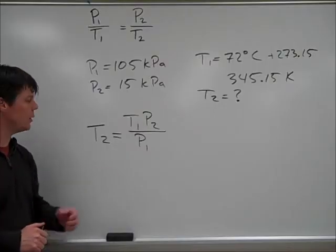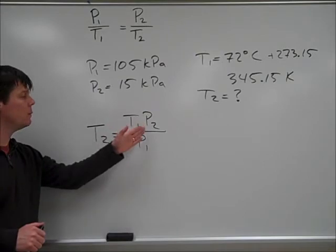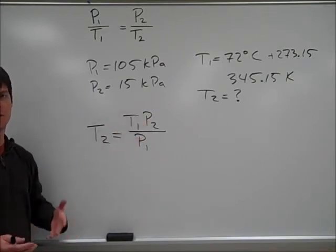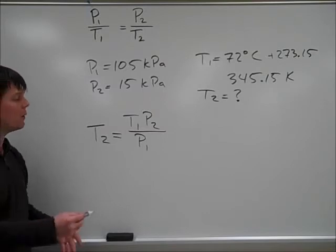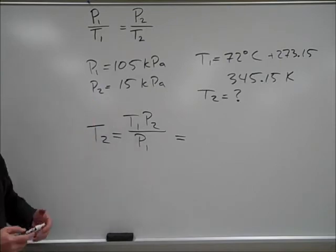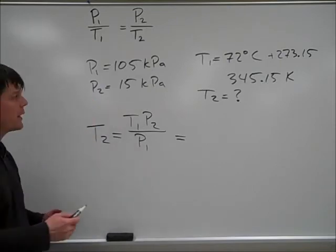We've solved for T2 and we found that it was T1 multiplied by P2 divided by P1. The next step in problem solving will be to substitute in our known values. Our T1 value was 345.15 Kelvin.